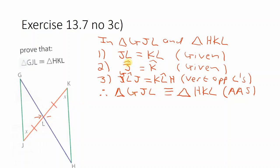So let's just have a look at that side. JL equals KL. So it is opposite angle H and opposite angle G. And we see G and H are in the same positions.